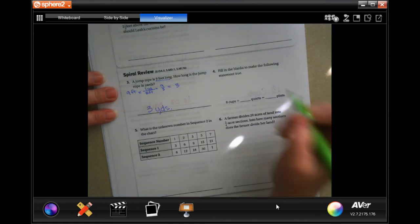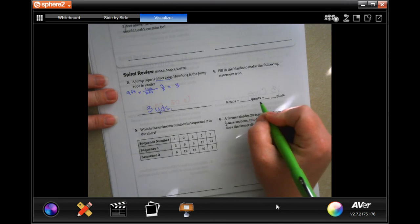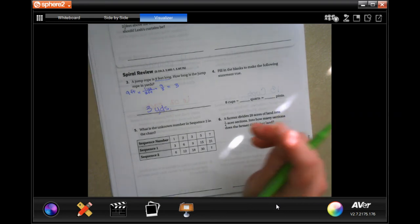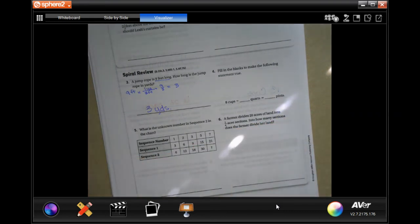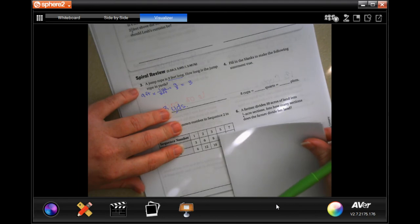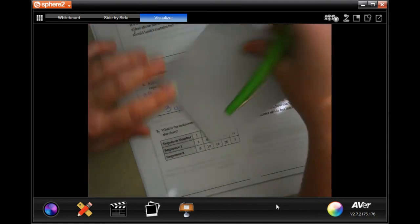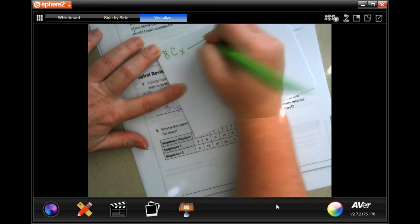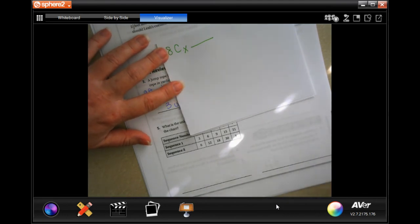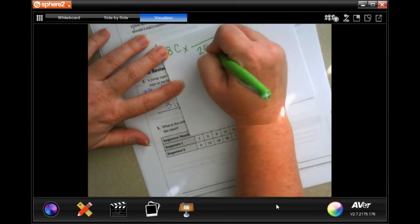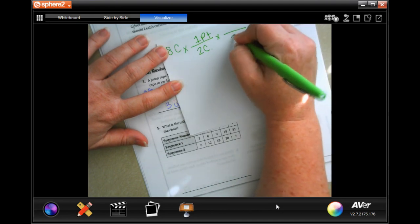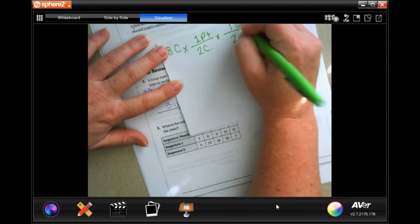Okay, fill in the blanks to make the following statement true. Eight cups is how many quarts, that's how many pints. Okay, so eight cups. I can't go straight from cups to quarts, so I'm going to have to make a pit stop at pints. Two cups are in one pint, and two pints are in one quart.